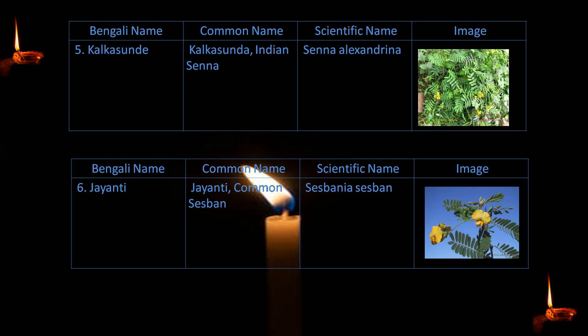5. Kalkashunde — Indian senna — Senna alexandrina. 6. Jayanti — Sesbania — Sesbania bispinosa.